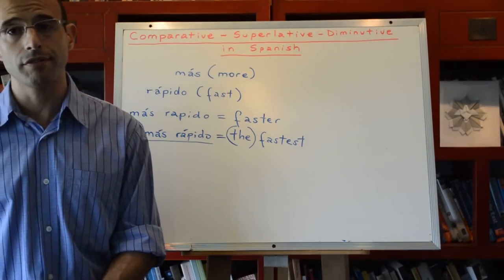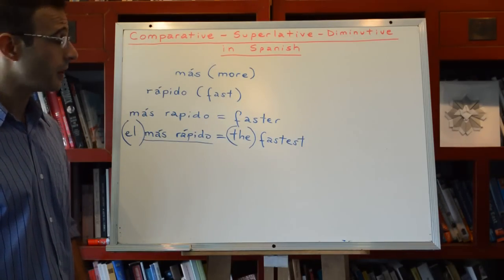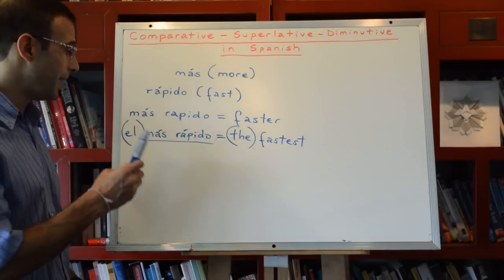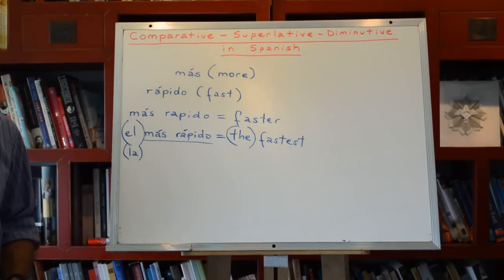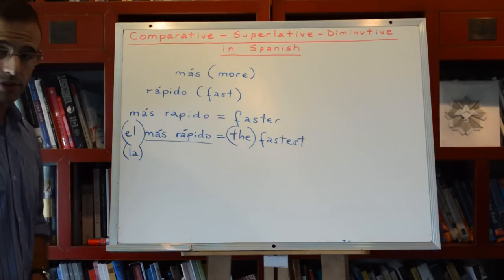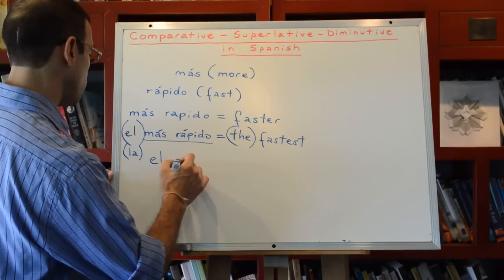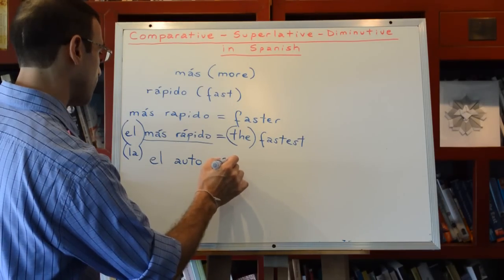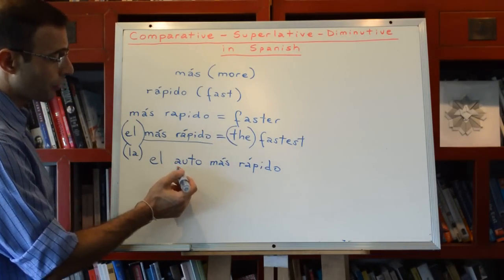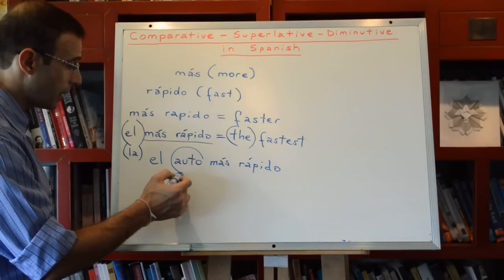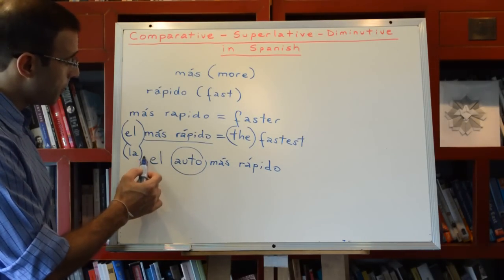Of course, in Spanish we have feminine and masculine articles, therefore depending on the thing we are talking about, if it's masculine it will be el, if it is feminine it will be la. So, for example, the word for car, auto, is masculine. So, the fastest car would be el auto más rápido. Of course, if we are including the noun, if the noun is going to be included in the sentence or the phrase, then the noun will go immediately after the article.